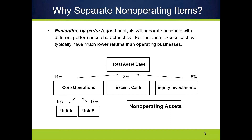The reason we try to separate non-operating assets is to get a clear picture of just the firm's operating assets and the return generated by those operating assets. The firm should only be in the business it's in if it is doing it better than anything else it could do. We want to remove excess cash and equity investments because they're going to distort our overall picture of the ROIC of the firm's operations if we include them in invested capital.